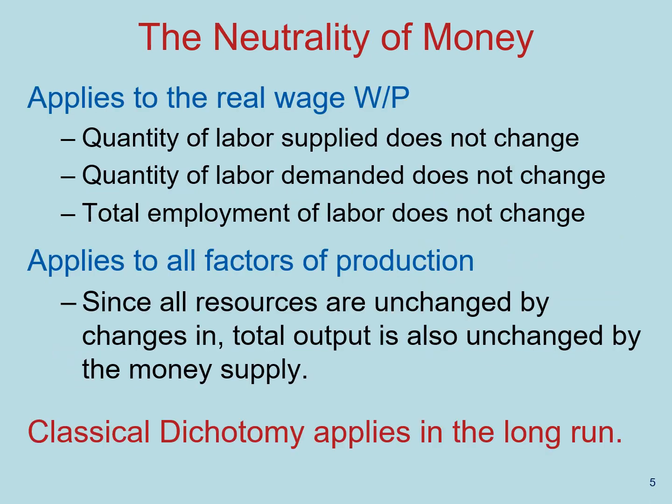The result that relative prices remain the same after changes in nominal variables is called money neutrality. It applies to real wages too. Even when wages and prices double, the quantity of labor supplied and demanded doesn't change, so real wages and employment should not change either.